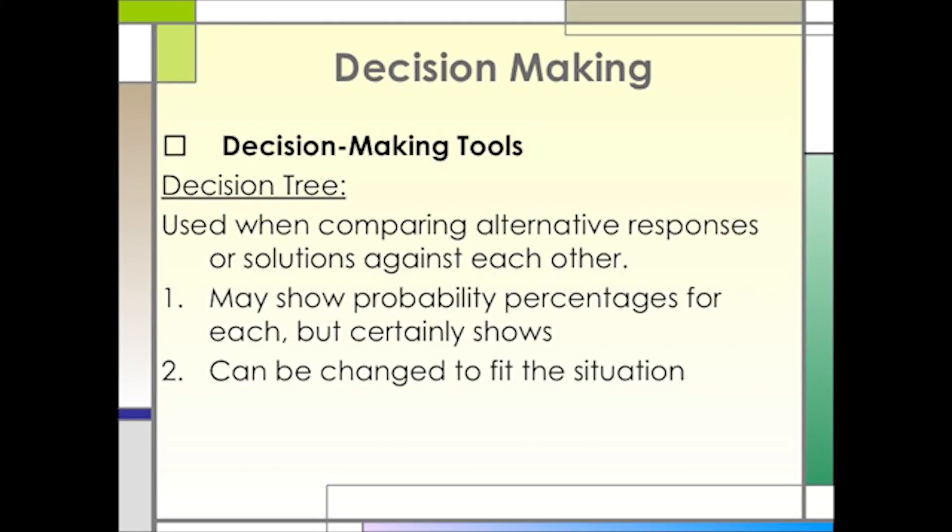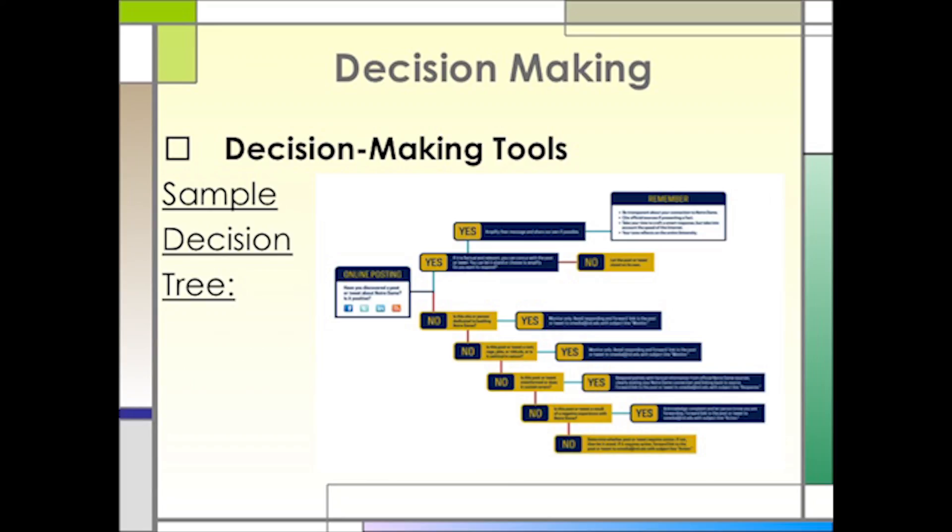We're halfway through this presentation and now it's time to talk about another decision-making tool. The decision tree. These are useful for comparing alternate projects because they show probability percentages for each, and they can be changed to fit the situation. This is an example of a decision tree based on online posting about the University of Notre Dame. You may need to enlarge it to read it fully. It gives the social media team at Notre Dame some direction. This is proactive decision-making at its finest, and how to, or whether to, respond to posts and tweets on social media.